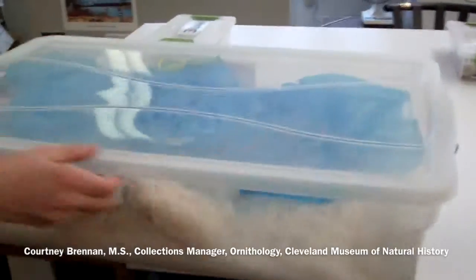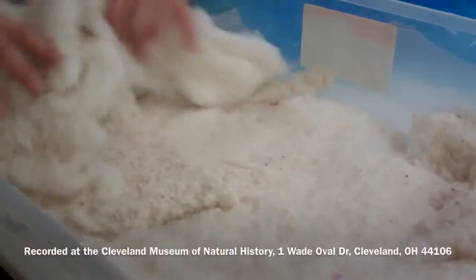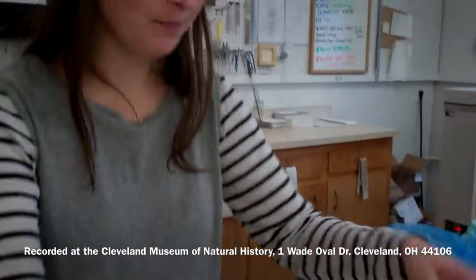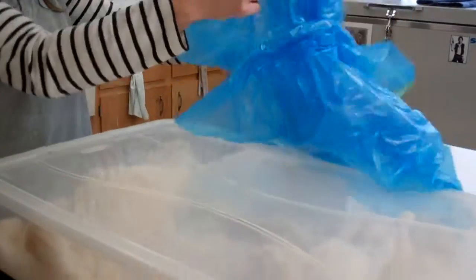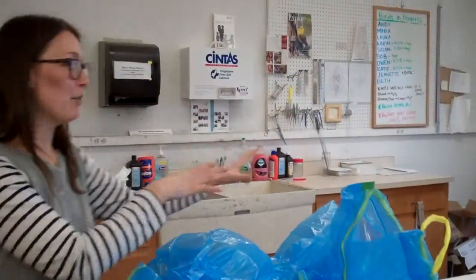All of our birds get placed gently into these giant tubs, and then we cover them with cotton. We double bag each tub by putting one garbage bag over it, then another one, and then they hang in the freezer.